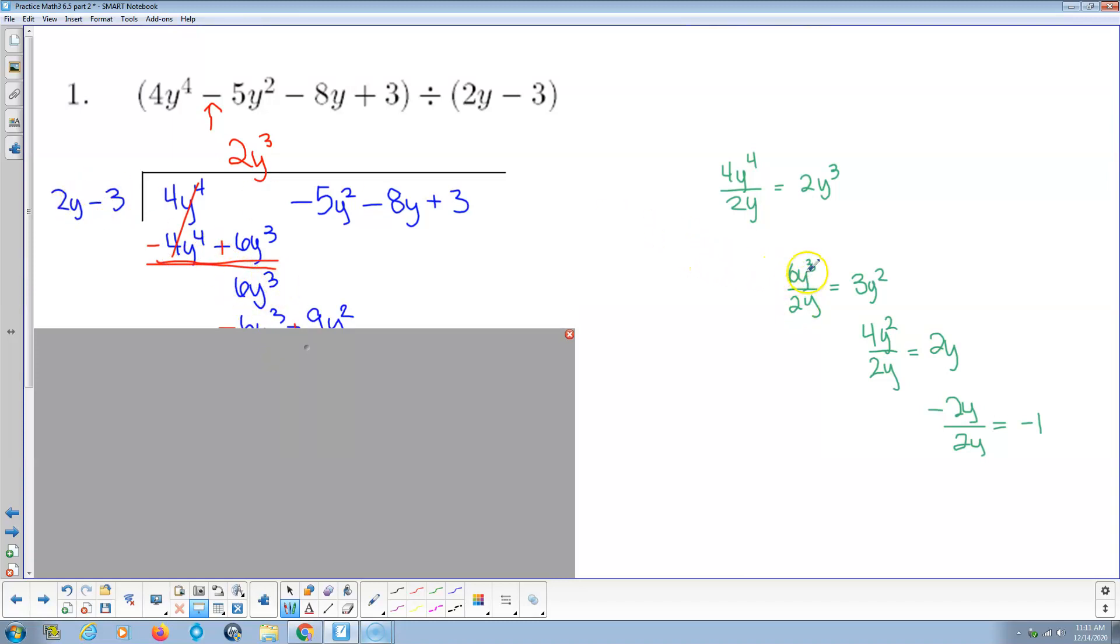Divided by 2y here for that leading term, that's 3y squared. So plus 3y squared. Then we multiply that back. 3y squared times 2y is 6y to the 3rd, 3y squared times negative 3 is negative 9y squared. We subtract, which means change the signs and add. And we end up with the y to the 3rds cancel, 9y squared minus 5y squared is 4y squared.